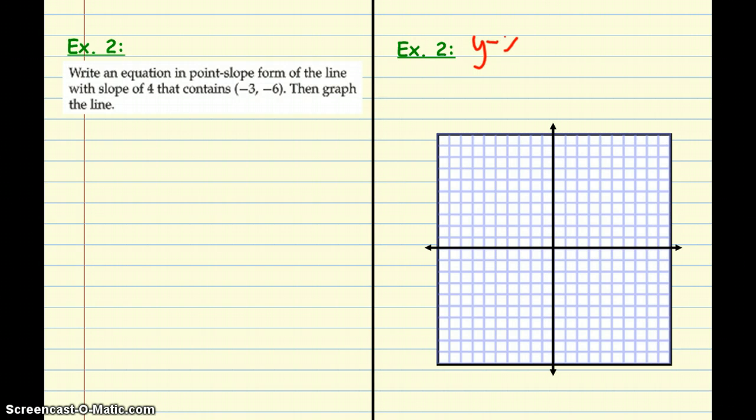As a reminder, we've got y minus y1 equals m times x minus x1. And what do we have? We know that y minus negative 6 is the same as y plus 6 equals, our slope is 4. And because our x value is negative 3, we will say x plus 3. Subtracting a negative is the same as adding a positive.